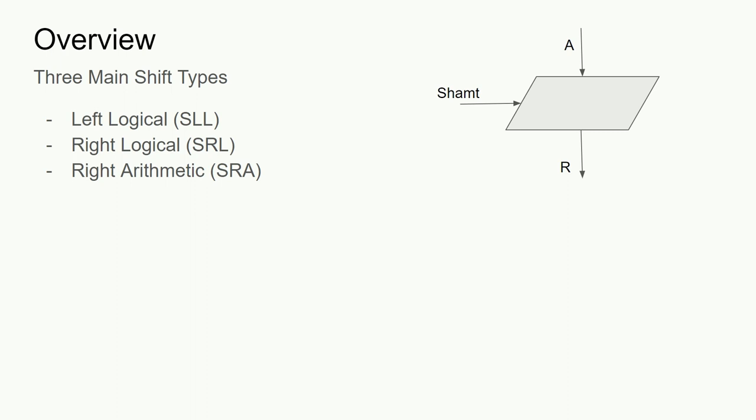With those points out of the way, let's start off with a brief overview of what an ALU shifter is. Basically, it's a device which takes input bits from A and can slide them left or right, producing the result R, based on a shift amount input. Most architectures specify three main types of shifts.